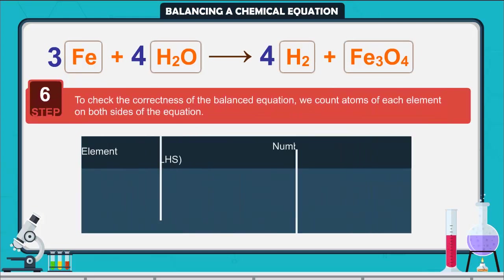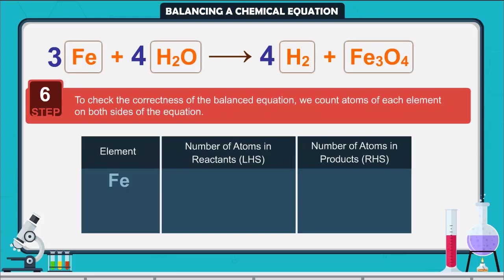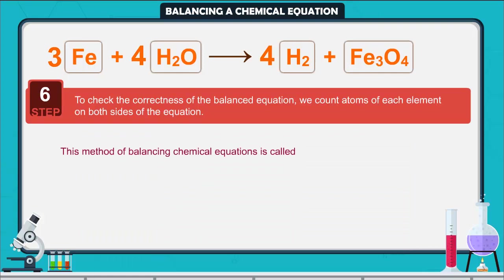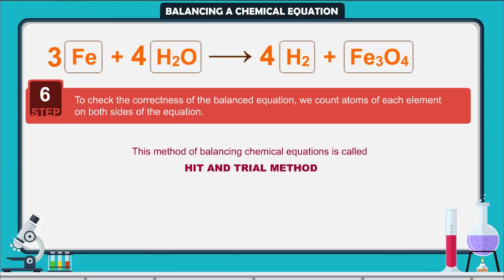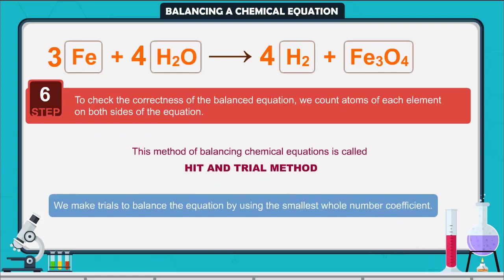Step 6: To check the correctness of the balanced equation, we count atoms of each element on both sides of the equation. The numbers of atoms of elements on both sides are equal. This equation is now balanced. This method of balancing chemical equations is called the hit and trial method, as we make trials to balance the equation by using the smallest whole number coefficient.